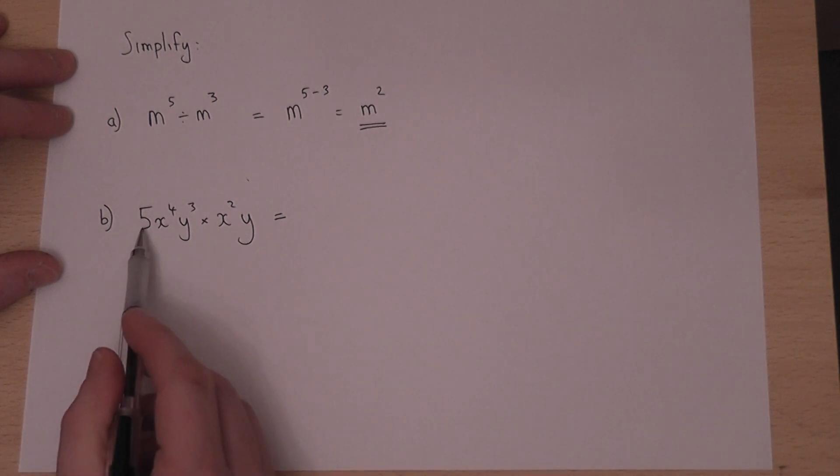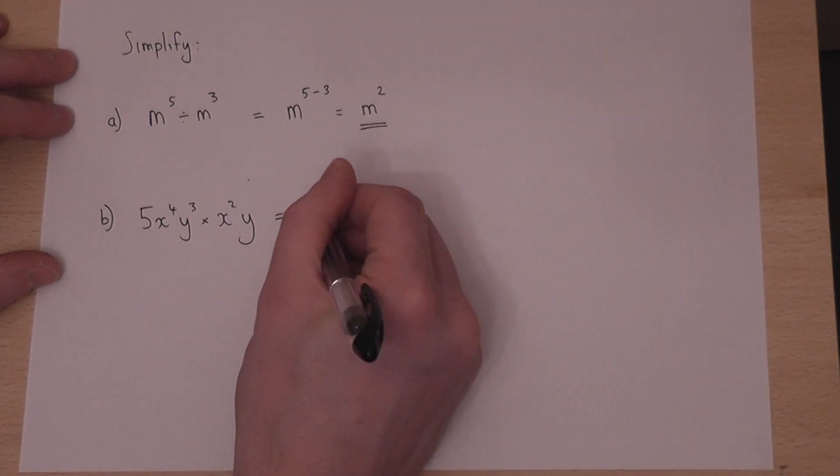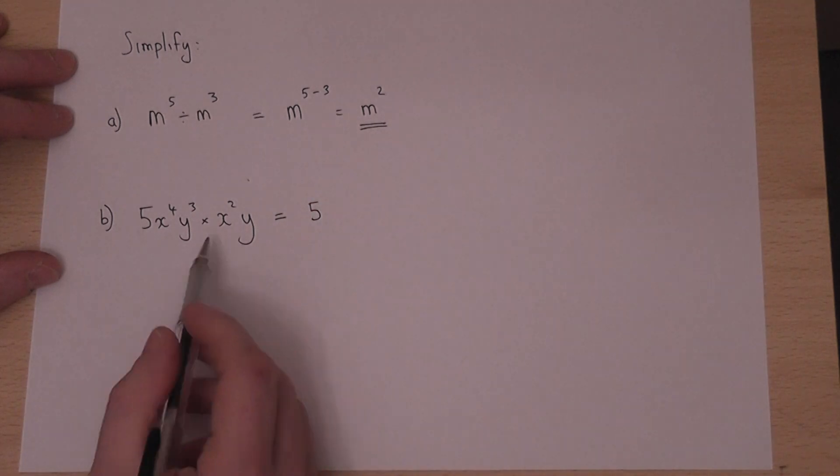There's a 5 and there's no other integer, so we leave it as a 5. There's basically a 1 there,